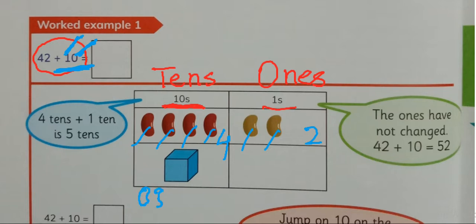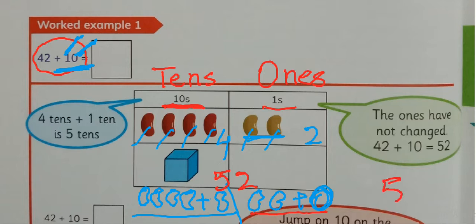We will add four beans already with us. 42 plus 10. We will add one bean here and two beans will get down as it is in the ones side. And we will not put any other bean here. So what it will be? Four plus one will be five and two will be as it is. So the number will be 52.